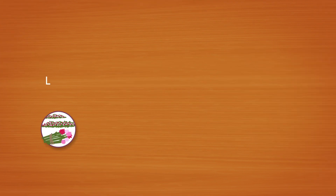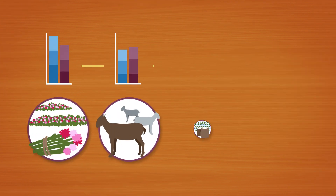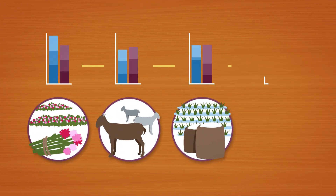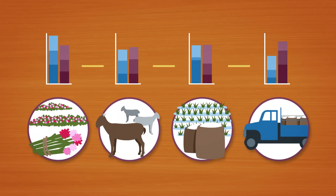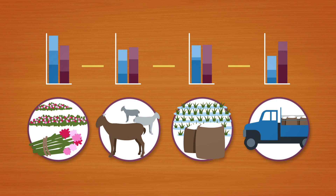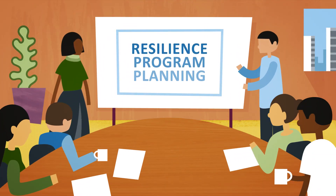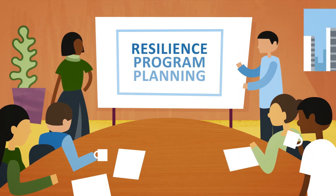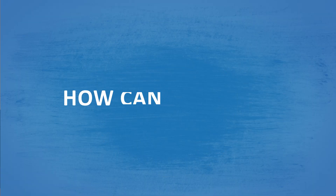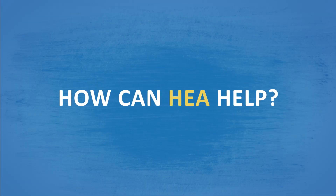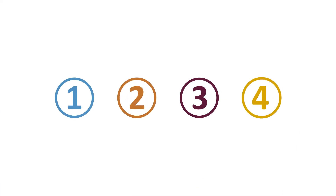This means we can easily compare the effects of a wide range of projects while still in the early planning phase. Let's consider an organisation that wants to support household livelihoods and increase their resilience. How can HEA help to develop the most effective project? We'll divide the process into four steps.